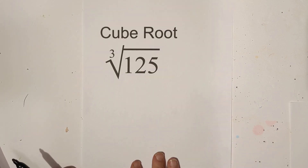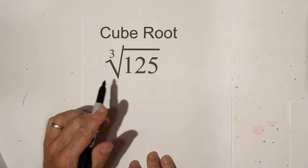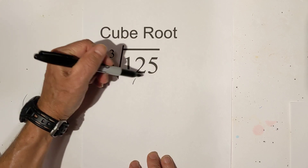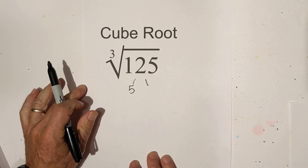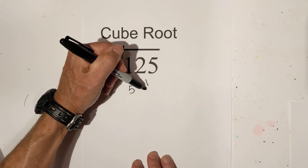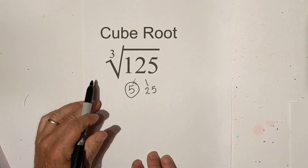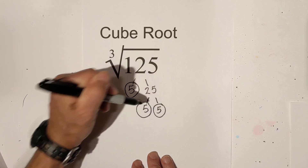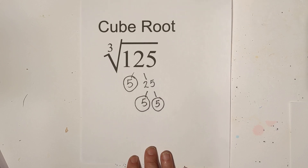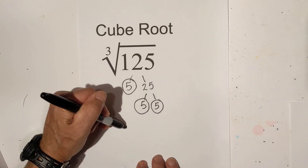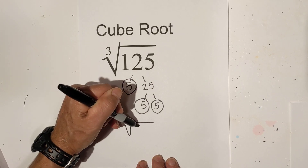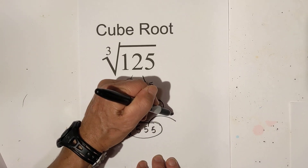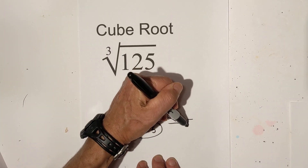Now we have the cube root of 125. If you know your cube roots, you know that this is a perfect cube, but let's work it anyway. It ends in 5, so I'm going to begin with 5. That is 5 times 25. Circle the 5 because it is prime. And then 5 times 5 equals 25. Now I write it under the cube root: 5, 5, 5. We have one triplet — pull it out. So the cube root of 125 is 5.